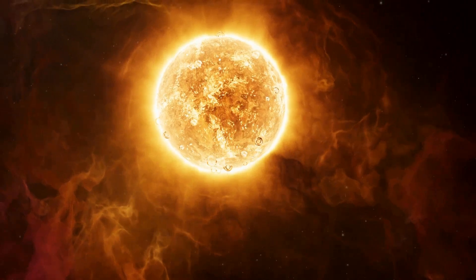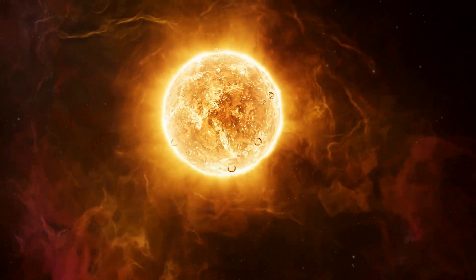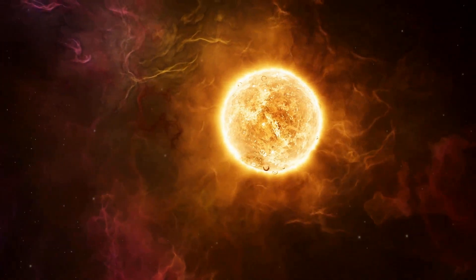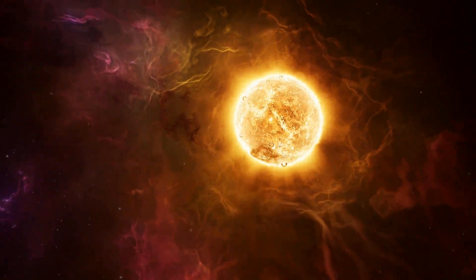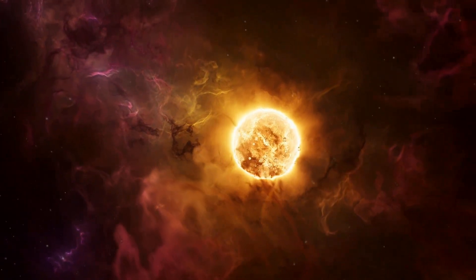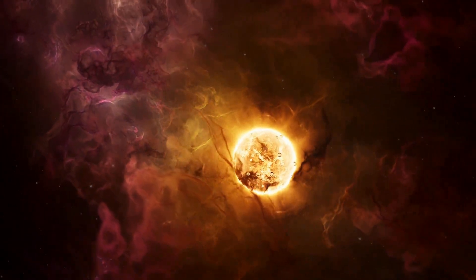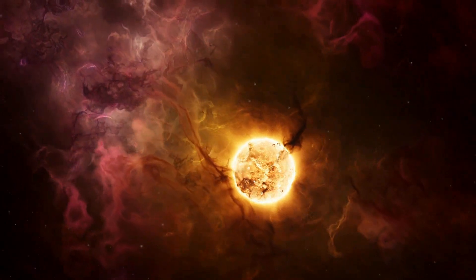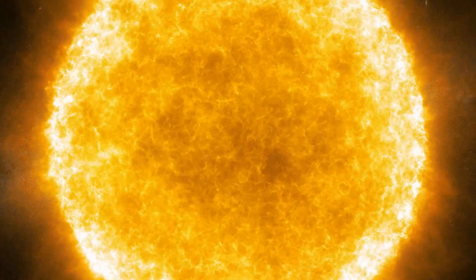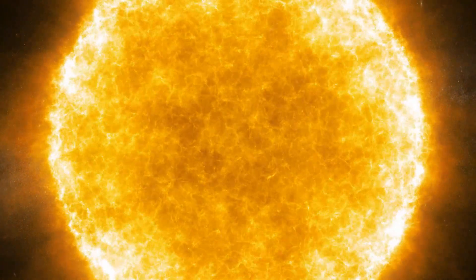The Sun's influence extends far beyond its immediate vicinity. The solar wind, a stream of charged particles, flows outward in all directions, shaping the environment of the entire solar system. This solar wind, along with solar flares and coronal mass ejections, can impact space weather, affecting satellites, spacecraft, and even power grids on Earth.